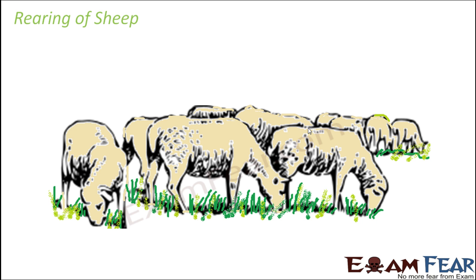The first thing we do is take care of the sheep, because these are the animals which are going to give us something important. So it is very important that we take care of these animals — that is what is done under rearing of sheep. Rearing involves feeding the sheep properly and taking proper care of them.